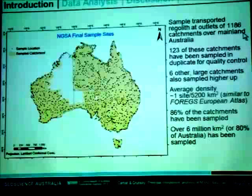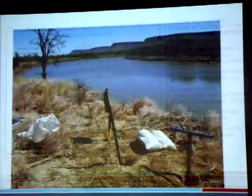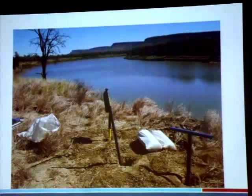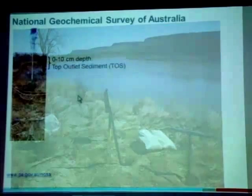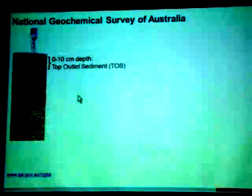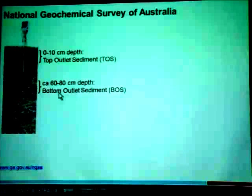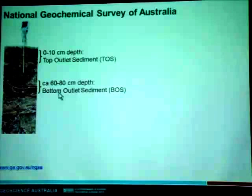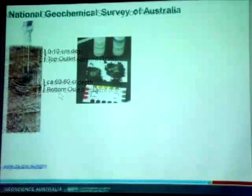This is a typical sample site in the Northern Territory. We were targeting flat plain or overbank sediments, collecting samples from several auger holes or from the surface. We took a top outlet sediment, or TOS, representing 0 to 10 centimeters depth, collected from a shallow pit and mixed to account for local and natural heterogeneity of the soils. The deeper sample was called bottom outlet sediment, or BOS, also collected from several auger holes and on average taken from 60 to 80 centimeters depth.